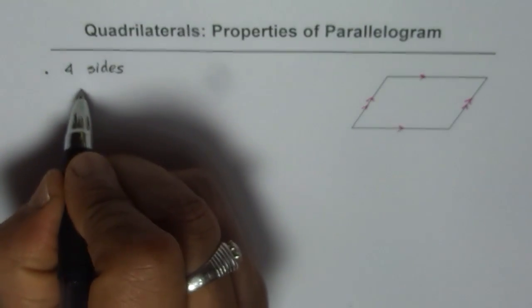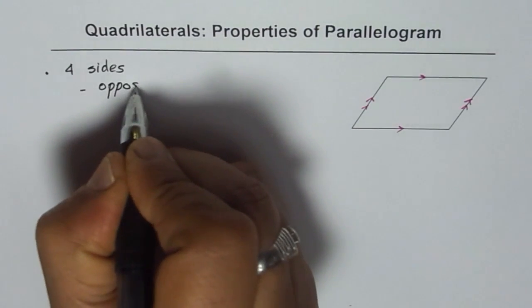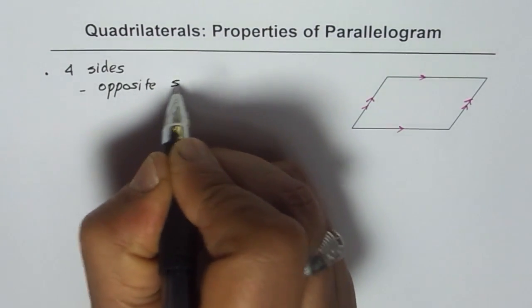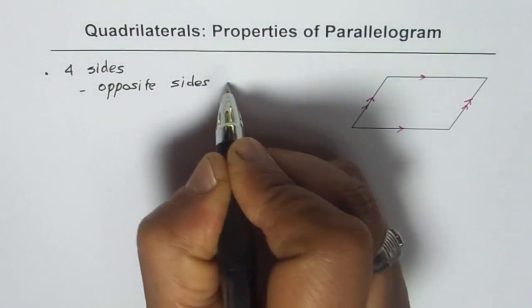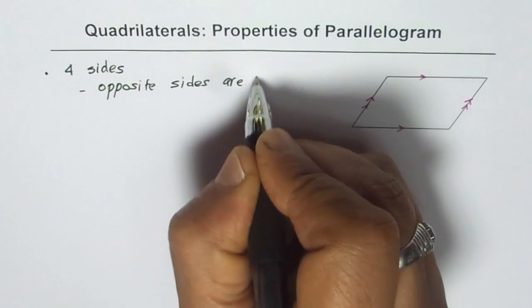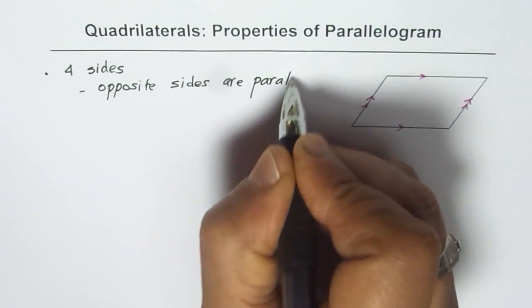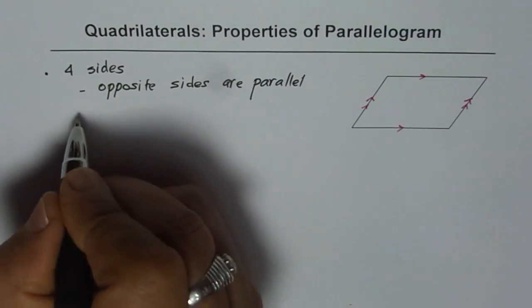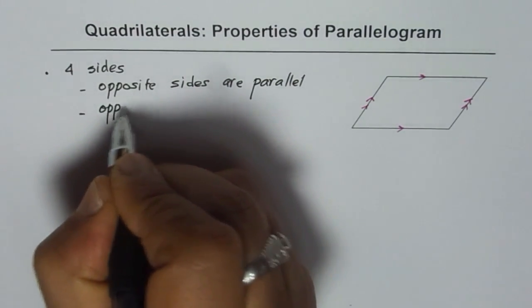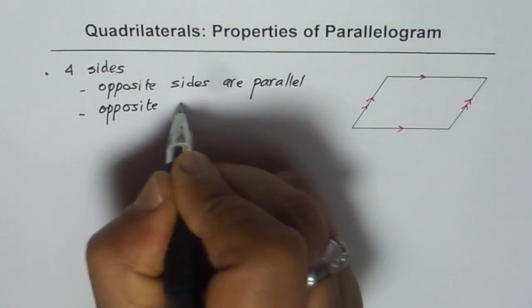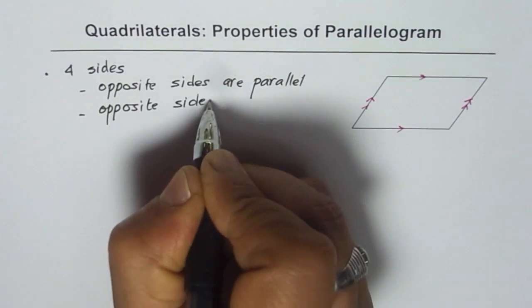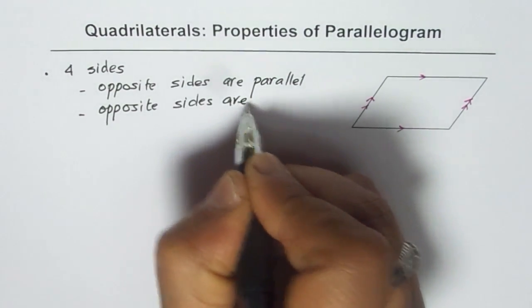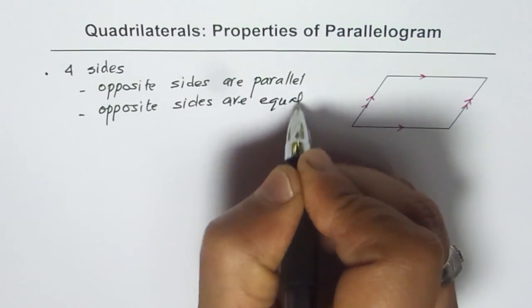Amongst these four sides we find that the opposite sides are parallel. So that is how it gets its name, parallelogram. And we will say that opposite sides are equal.